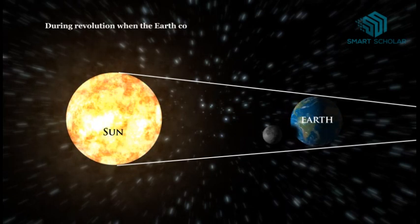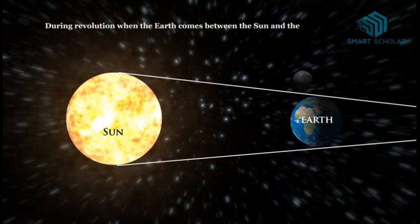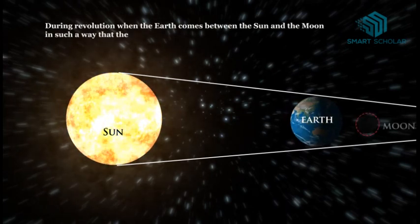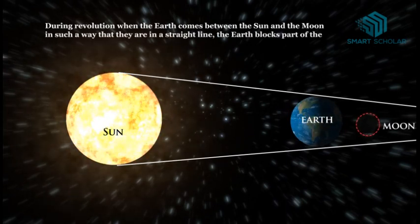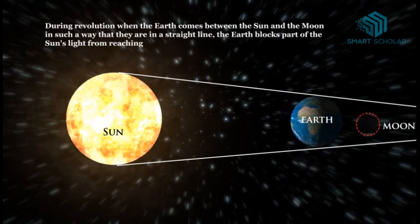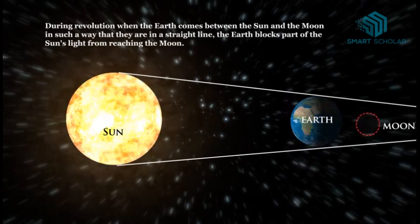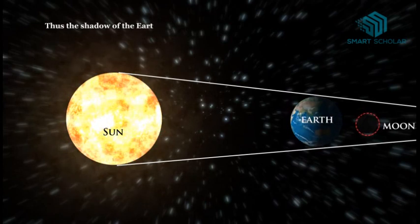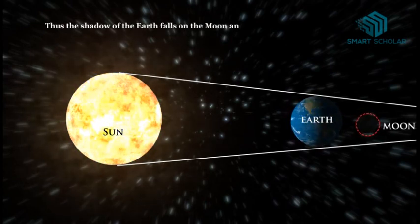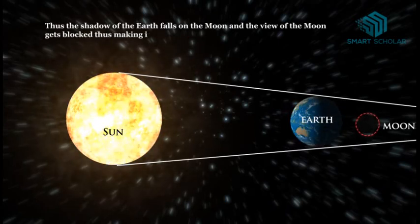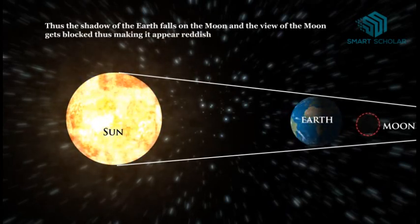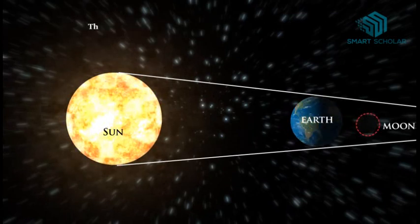During revolution, when the earth comes between the Sun and the moon in such a way that they are in a straight line, the earth blocks part of the Sun's light from reaching the moon. Thus the shadow of the earth falls on the moon and the view of the moon gets blocked, making it appear reddish in color.